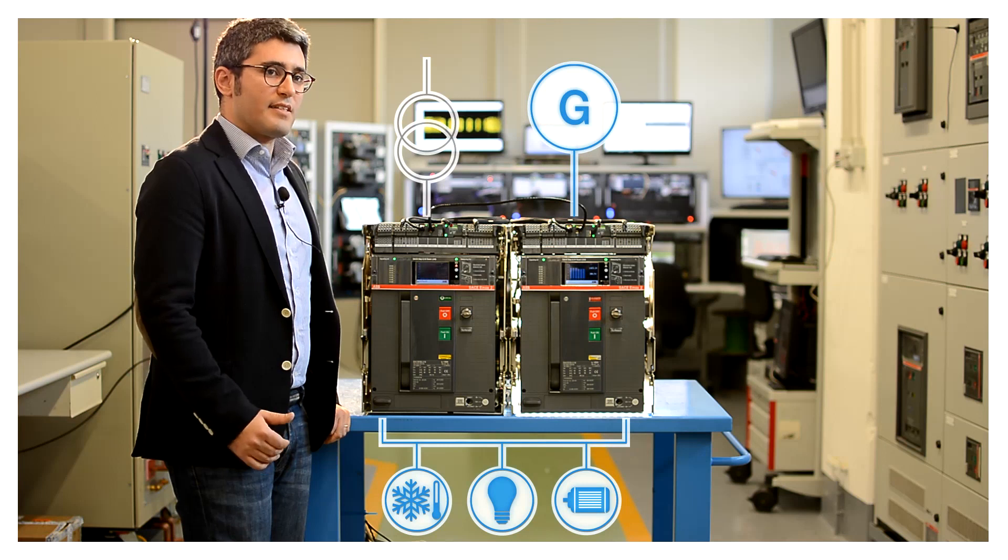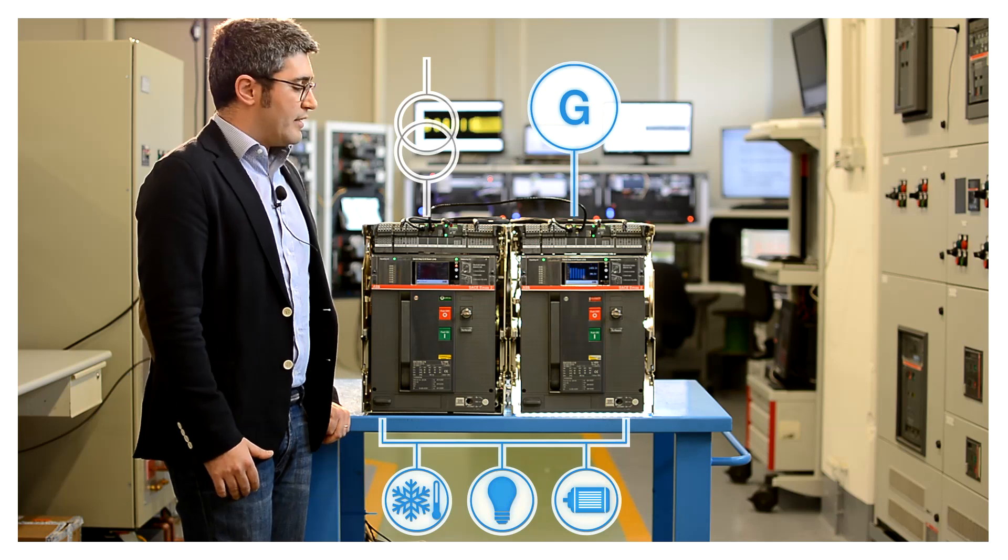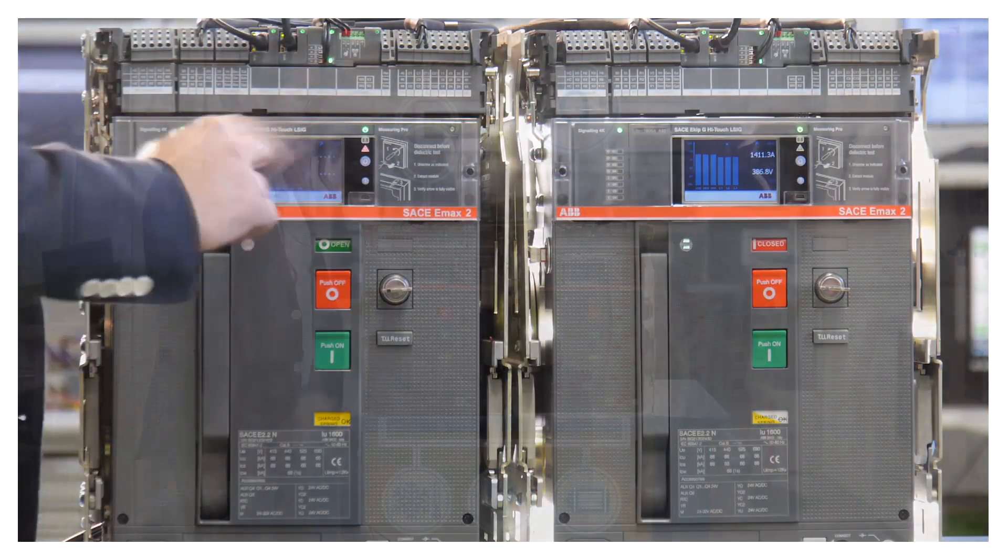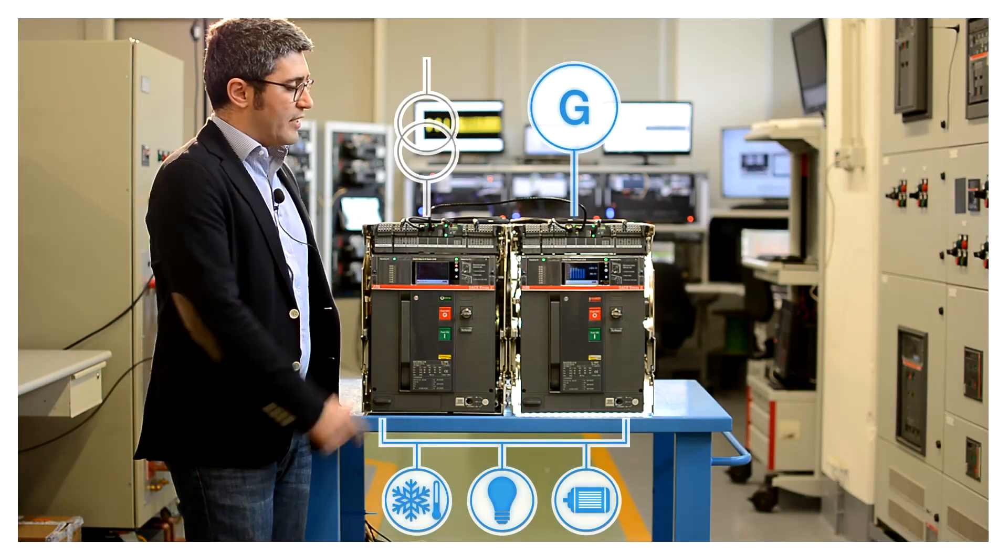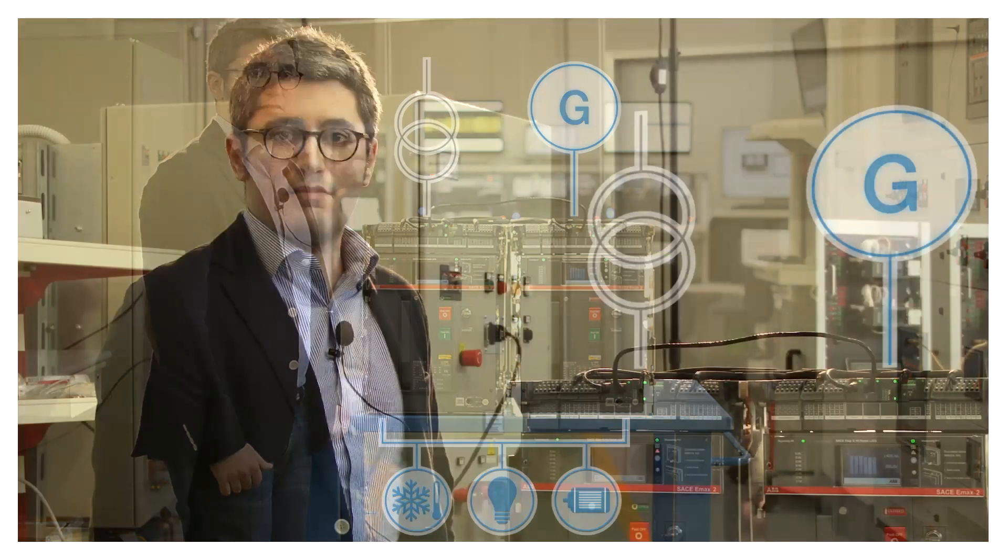As soon as the circuit breaker of the main line detects the grid is ok, the two trip units for the emergency and the main line share some information in order to detect if the two lines are synchronized. If the synchronization is ok,